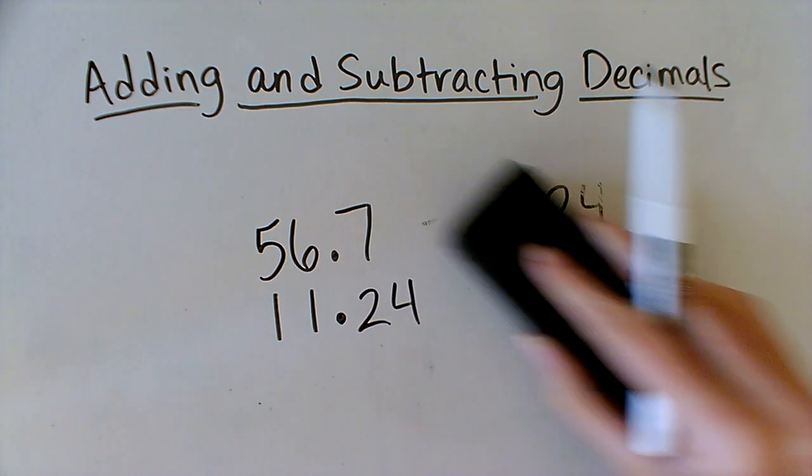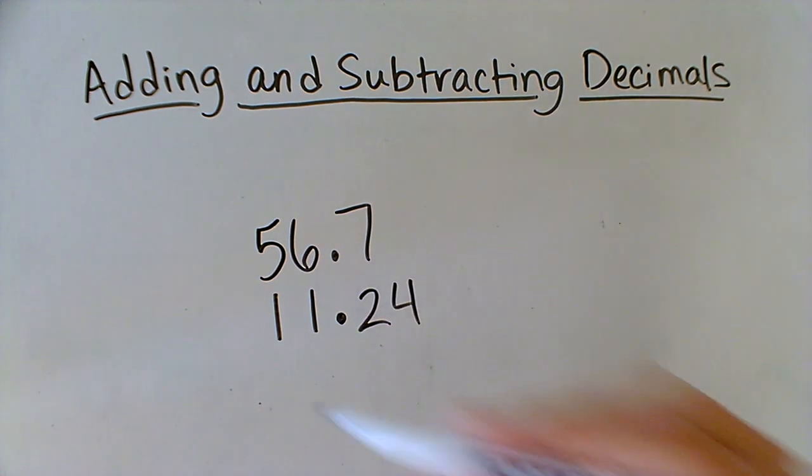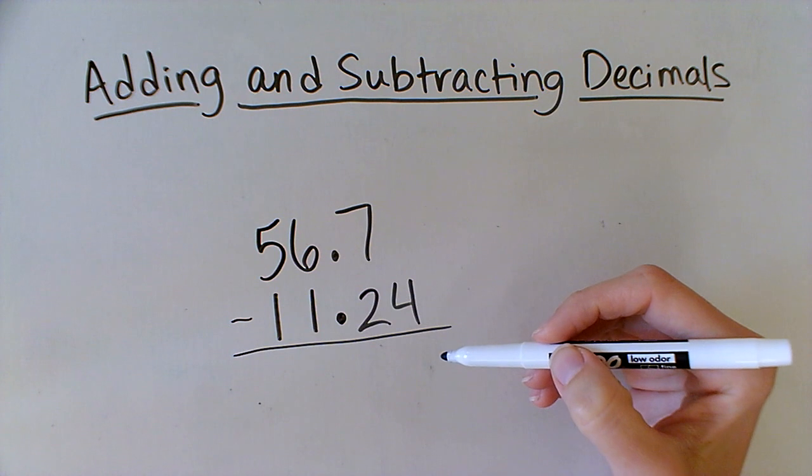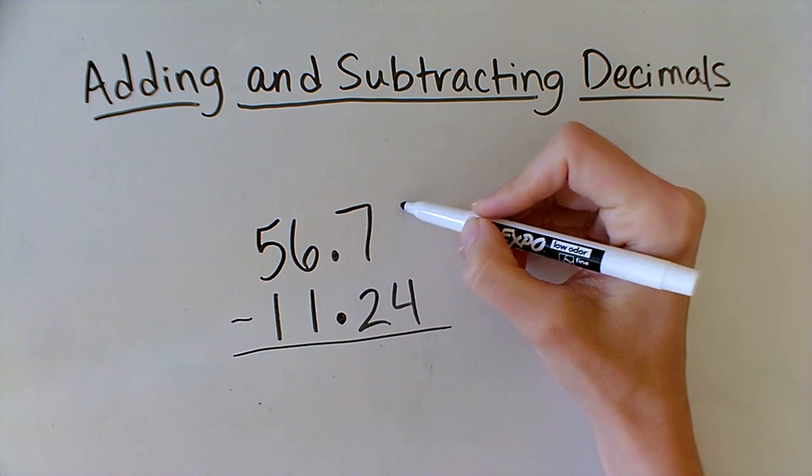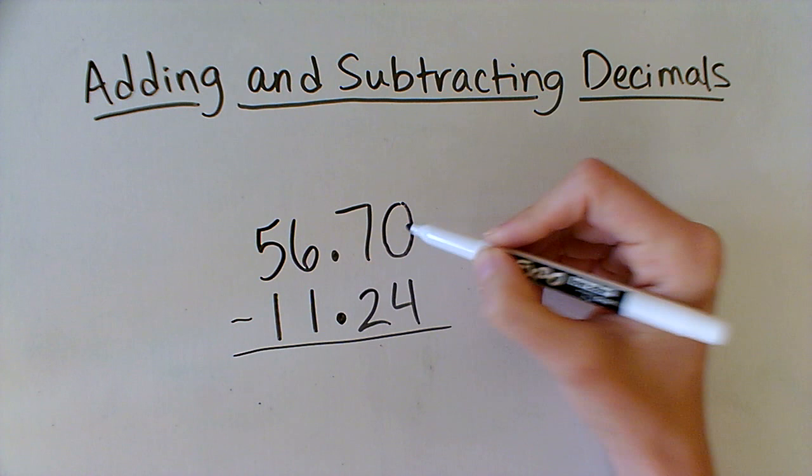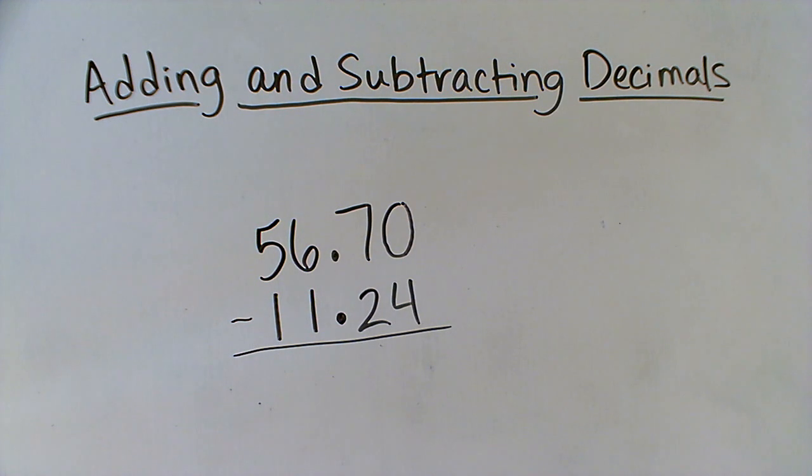Now let's try subtracting. When I go to subtract, I notice a problem. There's not actually anything above the 4, which seems funny, but I can actually just fill in a zero there because 7 tenths is 70 hundredths. Now it looks a bit more like what I'm used to.